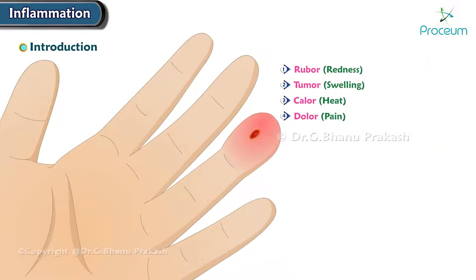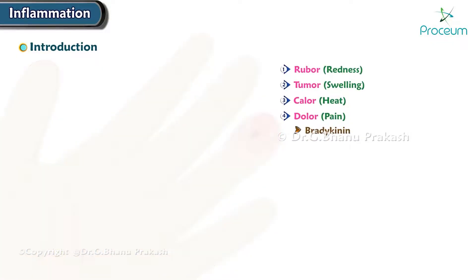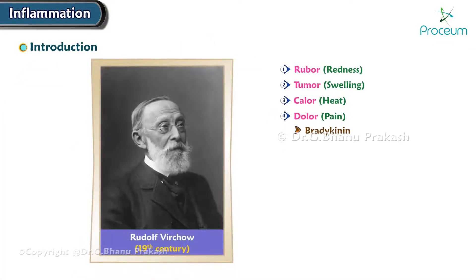The fourth is dolor, or pain. This is due to mediators, such as bradykinin. In the 19th century, German physician Rudolf Virchow added functio laesa, which means loss of function.